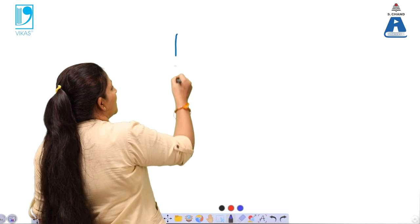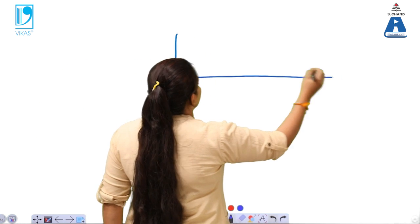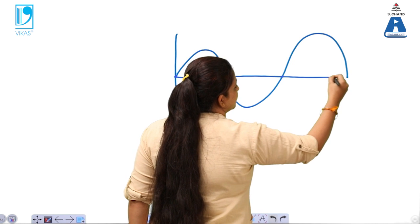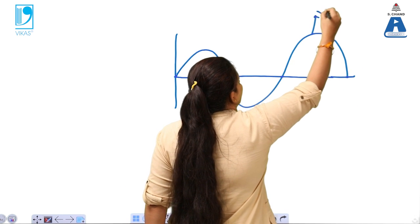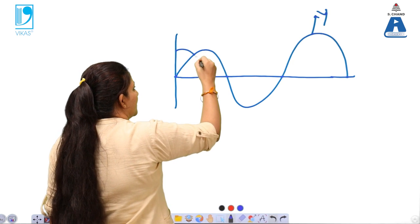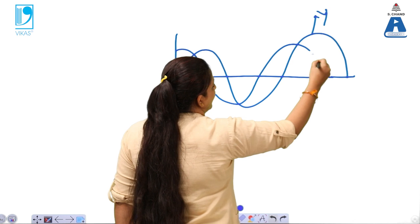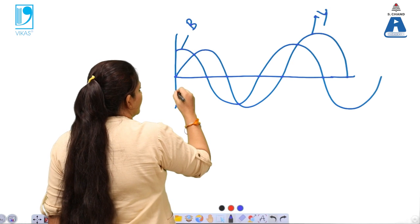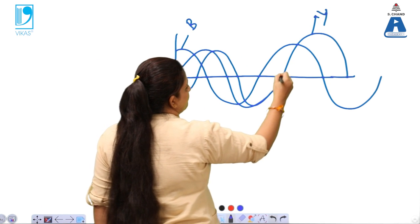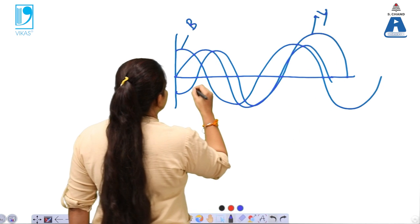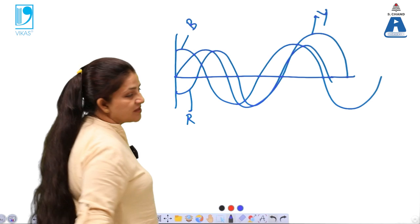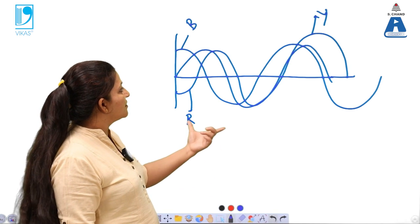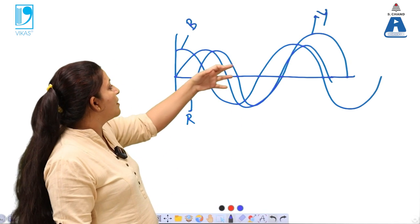On the phasor diagram, if the yellow one has no phase difference, then the blue one is next, and then the red one. These are the phasor diagrams for the three wires or three power supplies, which are represented in the three-phase circuit.